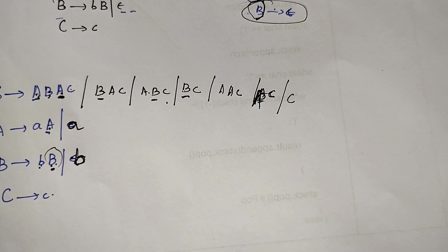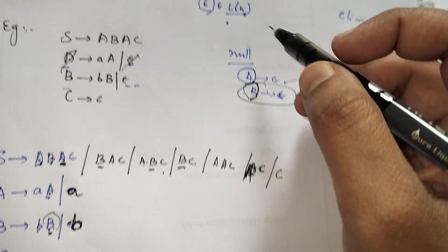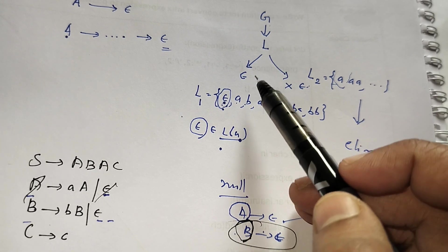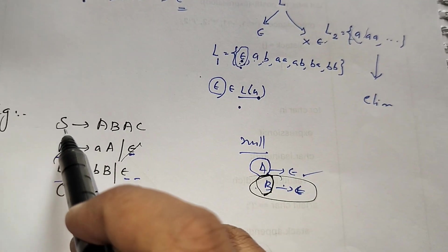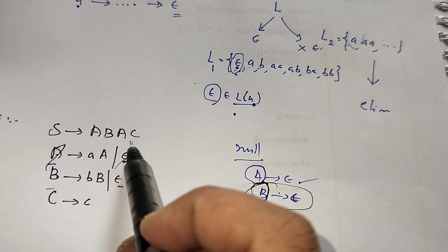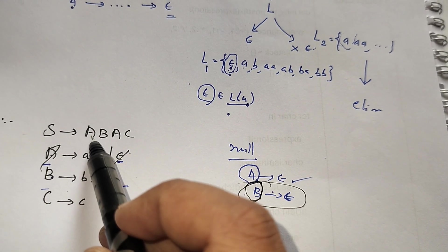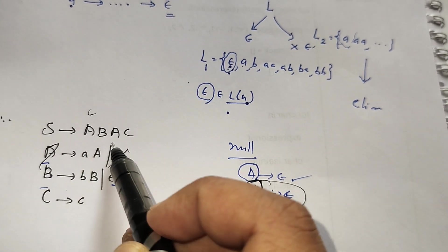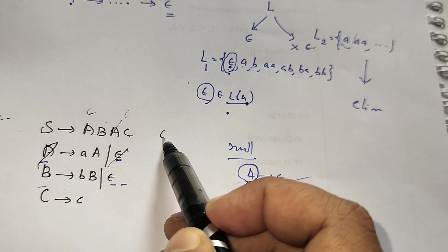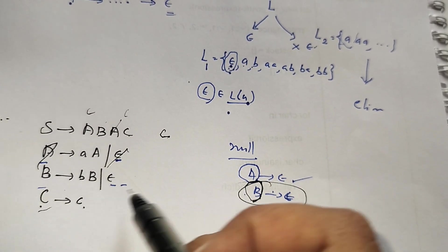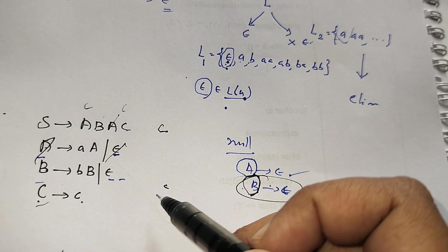Remember, if the language generated by the grammar contains epsilon, you cannot eliminate all epsilon productions. To check: trace derivations from the start symbol. In this example, substituting A → ε and B → ε ultimately produces 'c', not epsilon, so the language does not contain epsilon — meaning it was valid to eliminate all null productions.